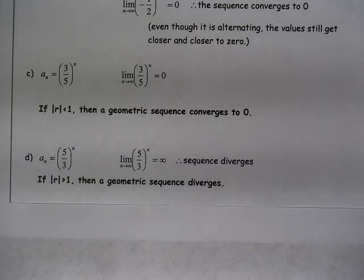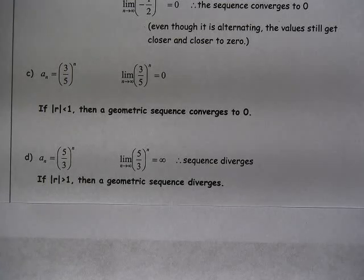Here we have a geometric sequence where r is greater than 1, so each time we're moving on to the next n, we're multiplying by 5 thirds, which makes each of the terms larger than the previous term. So that diverges. It does not approach any specific value.